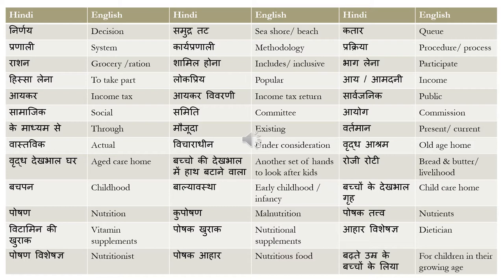'Ke madhyam se' means through a channel — 'is channel ke madhyam se'. 'Maujuda' means existing. 'Vartaman' means present or current — for example, current affairs is 'vartaman maamle'. 'Vaastavik' means actual. 'Vicharadheen' means under consideration, and it can also be translated in a legal context as 'sub judice' — meaning the subject is currently sub judice.